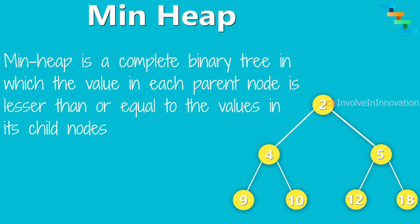In a min heap, all the parent nodes in the tree must be lesser than their child nodes. We will check whether a given tree is a min heap. First we check it is a tree with no cycle — here there are no cycles. Starting from the last non-leaf node which is 5: its child nodes are 12 and 18, which are greater than parent 5, so this node satisfies the condition. Next non-leaf node is 4: its child nodes are 9 and 10, greater than parent 4 — satisfies the condition. The root node's children are 4 and 5, which are greater than root 2 — satisfies the condition. As a whole, this binary tree is a min heap.